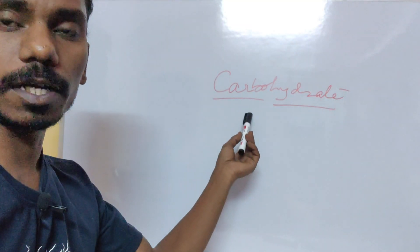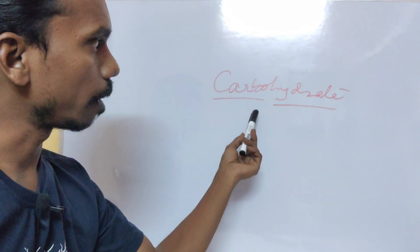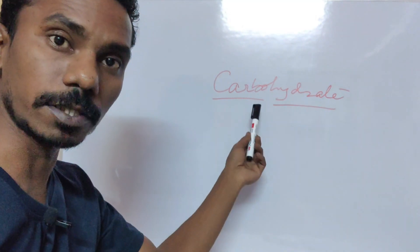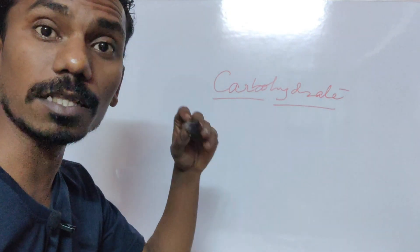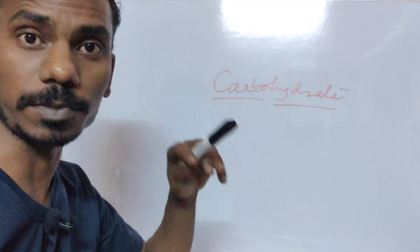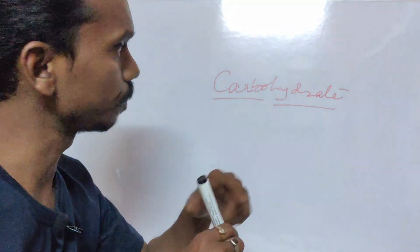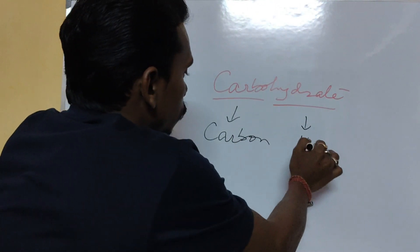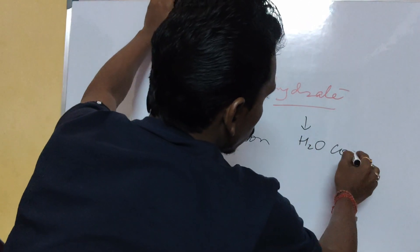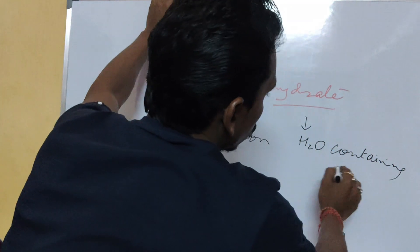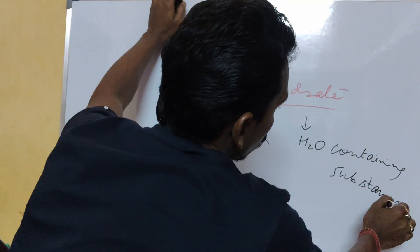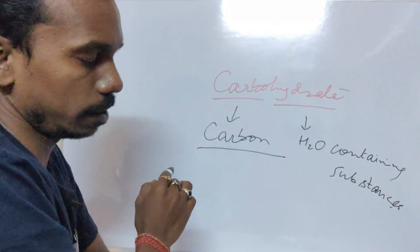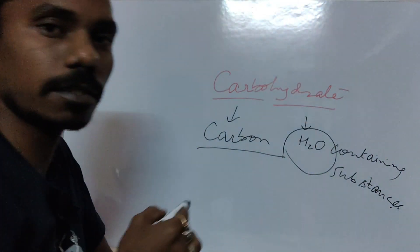If we see the term carbohydrate, it is a mixture of two words — one is 'carbo' and another one is 'hydrates'. Carbo means carbon and hydrates means the chemical compound which contains water. So basically carbohydrates are substances in which carbon is somehow associated with water.